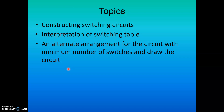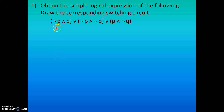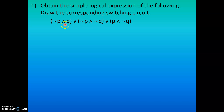The first question: obtain the simple logical expression of the following and draw the corresponding switching circuit. The question is: (¬P ∧ Q) ∨ (¬P ∧ ¬Q) ∨ (P ∧ ¬Q). Here you can see three statement patterns — the first one is inside the first bracket, the second is here, and the third is here. All are connected with the disjunction symbol. Next, check whether the symbols inside these brackets are the same.